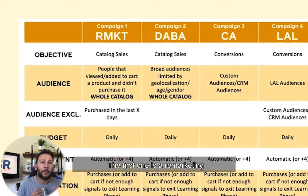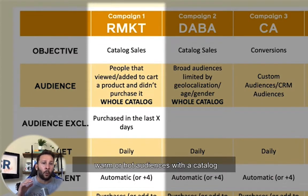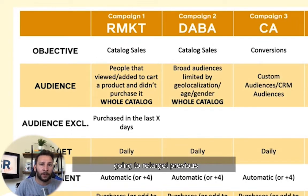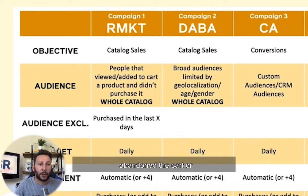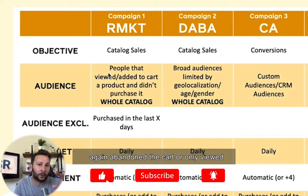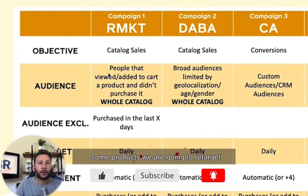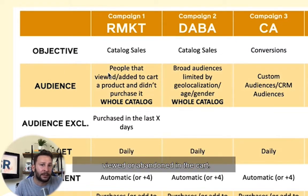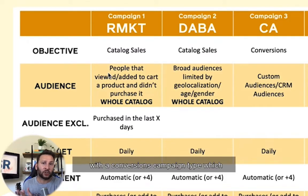The first one is a remarketing campaign, meaning that we will target warm or hot audiences with a catalog sales campaign type, meaning that we are going to retarget previous visitors — people who have abandoned the cart or viewed products. We are going to retarget them dynamically with the products that they viewed or abandoned in the cart. So it would be super relevant. With a conversions campaign type, which is not this one — this is the catalog sales campaign type.